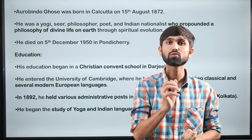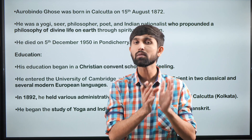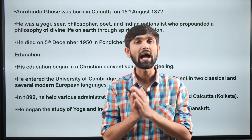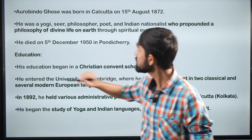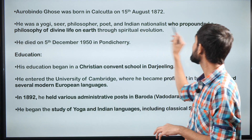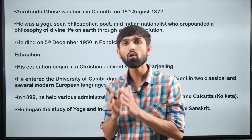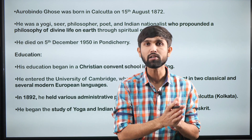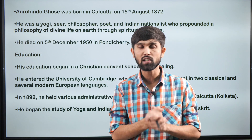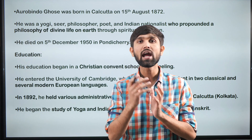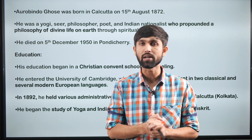From the exam point of view, let's take a brief look at Aurobindo Ghosh's life and contributions. He was born in Calcutta on 15th August 1872 and was a yogi, seer, philosopher, poet and Indian nationalist who propounded a philosophy of divine life on earth through spiritual evolution. He was initially an educated freedom fighter who then renounced that path and adopted a more spiritual approach, later turning into a yogi, after whom the famous ashram in Pondicherry — now Puducherry — is situated.